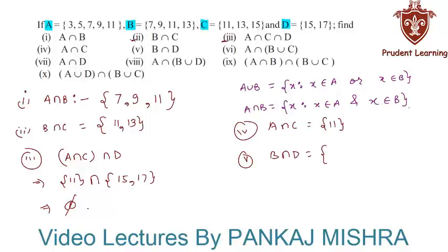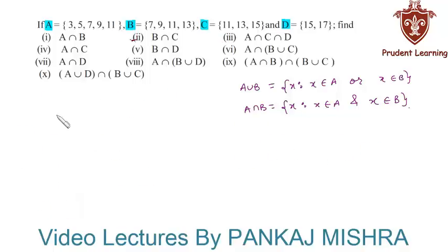In the fifth section we have B intersection D, meaning all the elements common to set B and set D. Here you can see that no element is common between set B and set D, so B intersection D is an empty set.